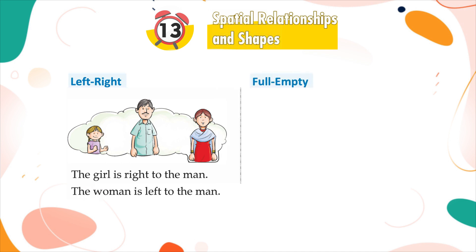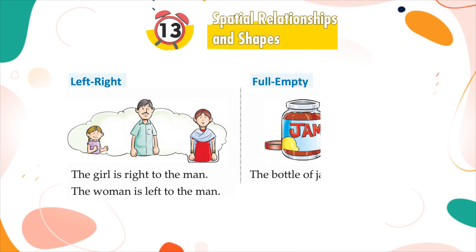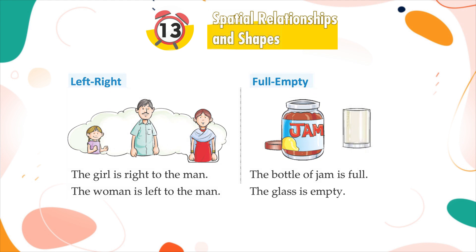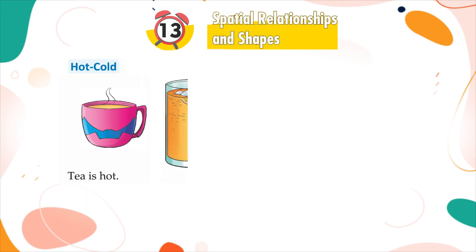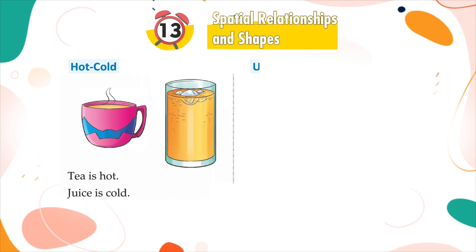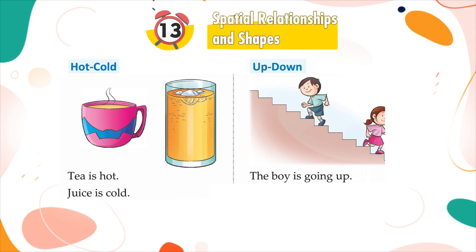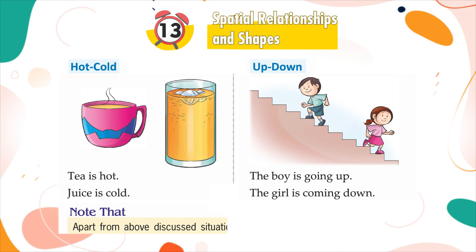Full, empty: The bottle of jam is full. The glass is empty. Hot, cold: Tea is hot. Juice is cold. Up, down: The boy is going up. The girl is coming down.